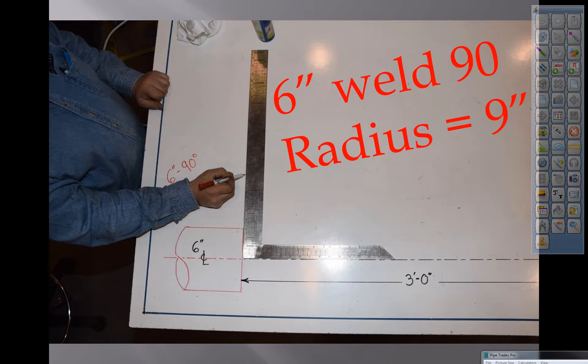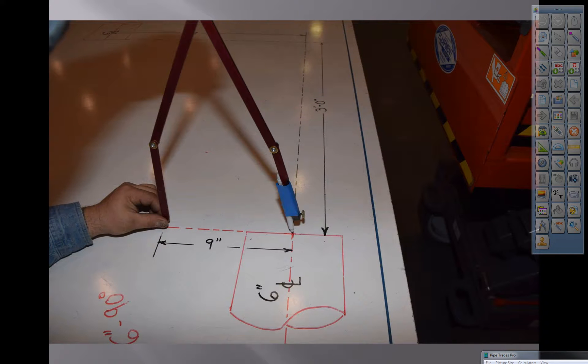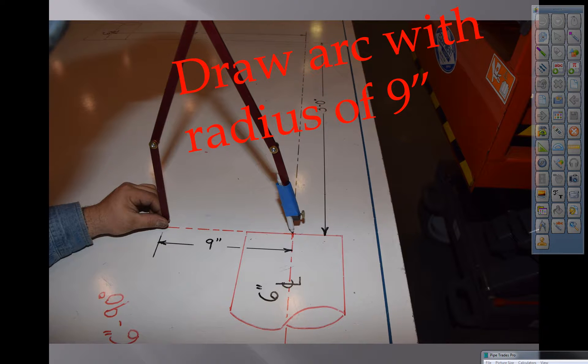So anytime we have problems like this, we're looking for some information that we know, and this is predetermined by the manufacturer. So a six inch weld 90 has a radius of nine inches, or the takeoff is nine inches. So you see our square is perpendicular to our black dotted line. And put a dot there at nine inches. Now we're going to draw an arc with the radius of nine inches, going from that vertex there.